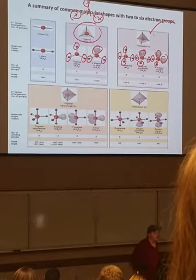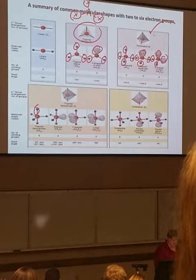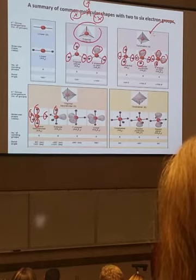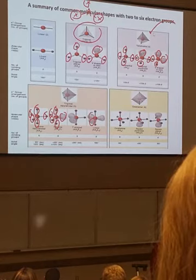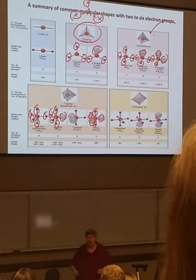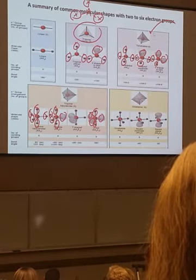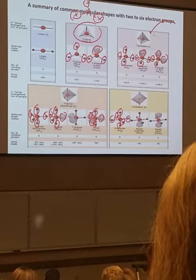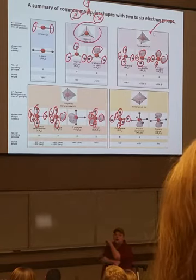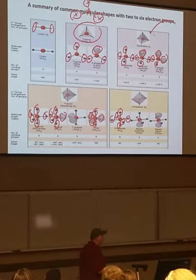The next category, trigonal bipyramidal, has five areas of repulsion. If they are all atoms, we call it trigonal bipyramidal. Notice that all the shapes in that category have five areas of repulsion. Octahedral has six areas of repulsion, and linear has two areas of repulsion. The key is to count how many areas of repulsion you have.